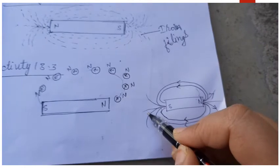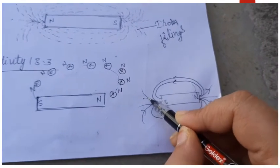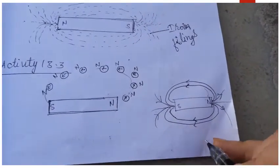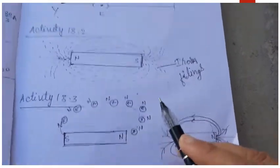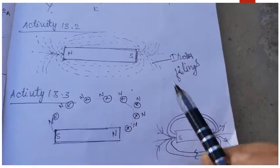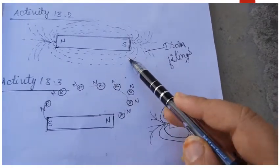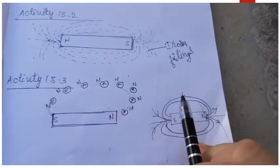This pattern is known as the pattern of magnetic field lines which we will study about later in the same chapter. So from activities 13.2 and 13.3, we get to know the shape or pattern of magnetic field which exists around the bar magnet.